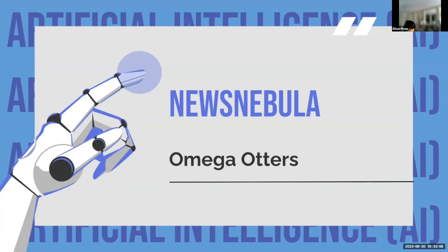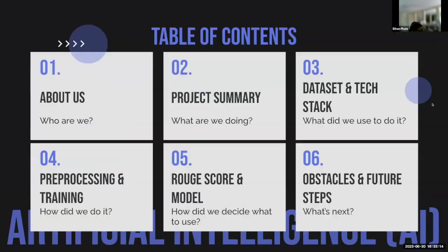Our team is the Omega Otters and this is our project called News Nebula AI. For an overview of our presentation: first, a brief about our team, a summary of our project, the dataset we used, the tools we used to create our model, the pre-processing and training processes, the ROUGE score and model results, the obstacles we encountered, and future steps we might take.